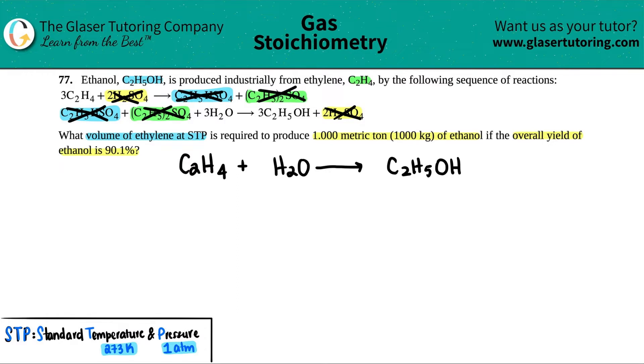Now let's write down what we have. The question is asking for what volume of the ethylene? The ethylene is C2H4, so we're looking for this one. We're looking for the volume. We want to find the volume of ethylene at STP. STP stands for standard temperature and pressure. The temperature at STP is always 273 Kelvin, and the pressure at STP is always 1 atm. So whenever they give you STP, you know two more pieces of information. We're trying to find the volume required to produce one metric ton, aka 1,000 kilograms of ethanol. We like to use metric units, so we care that it's 1,000 kilograms.